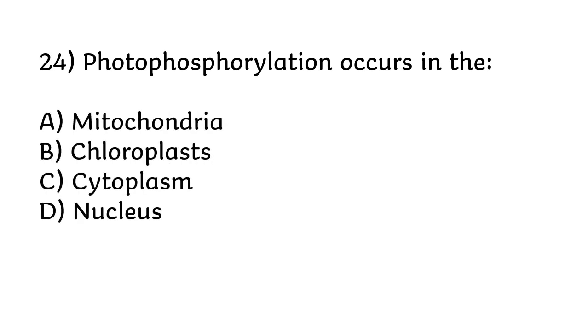Photophosphorylation occurs in: the mitochondria, chloroplasts, cytoplasm, or nucleus. The correct answer is option B, chloroplasts.